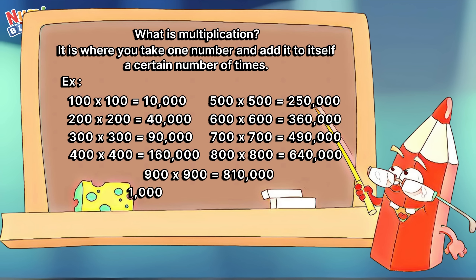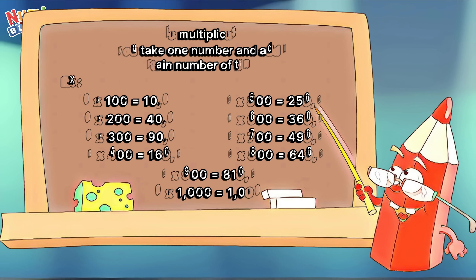1,000 times 1,000 is equals to 1,000,000.